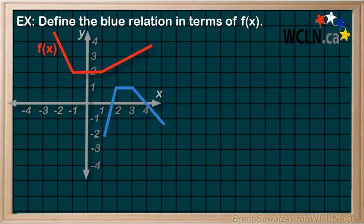In this case, our original graph is f in terms of x, and it's shown in red. The transformed relation is shown in blue, and we're to define the blue relation in terms of f in terms of x.